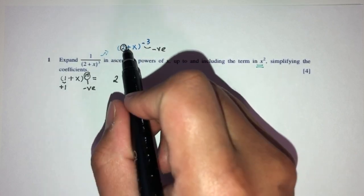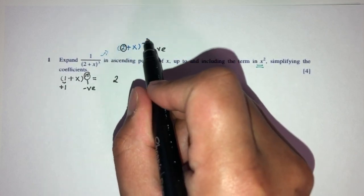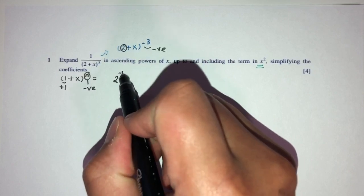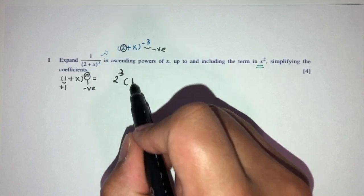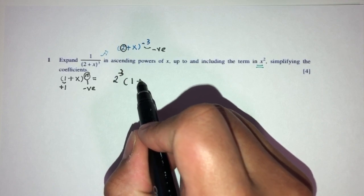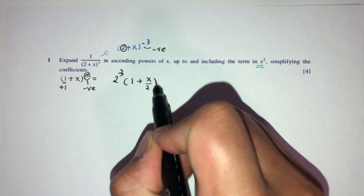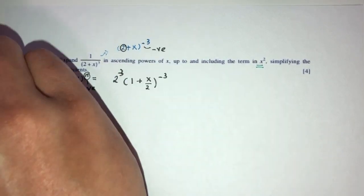For example, here you will have 2 outside, but we have to provide it with the power as well. And then here you will have 1, and then here we have plus x over 2 power this one.